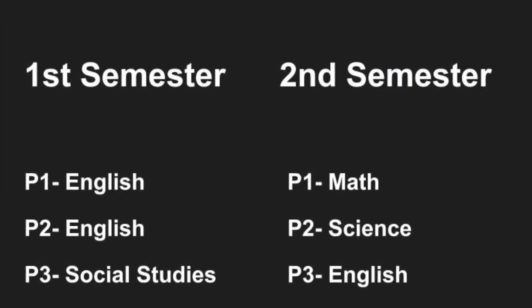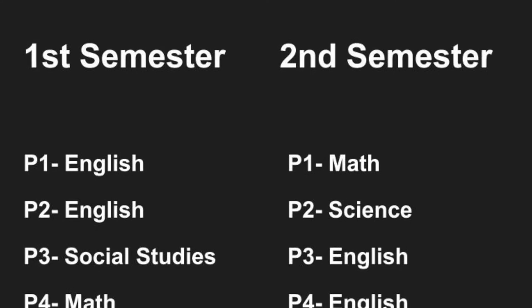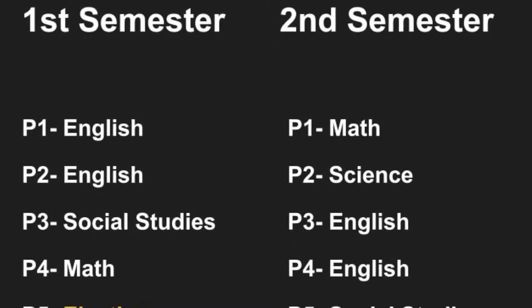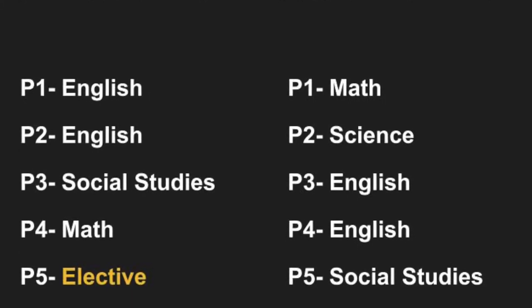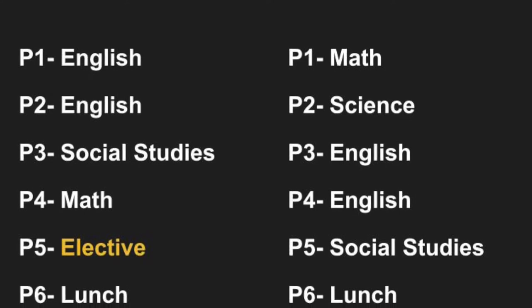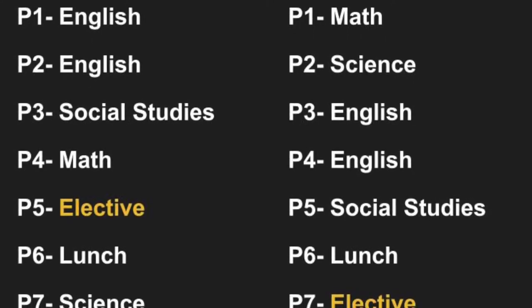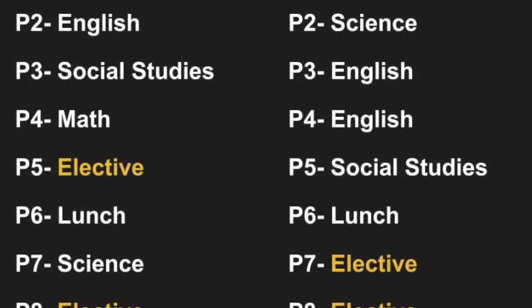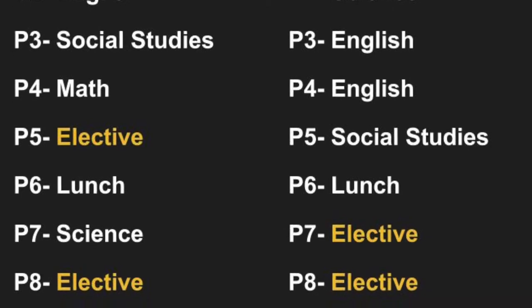Just like this year, you will have eight periods in a day and the year is divided into two semesters — the first half and the second half of the school year. Your English, Science, Social Studies, and Math classes will all be scheduled for you, as well as lunch. Those are your core classes and will last all year long. In addition, you will have two class periods that need to be filled with elective classes.